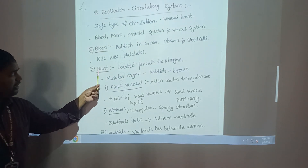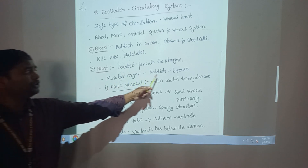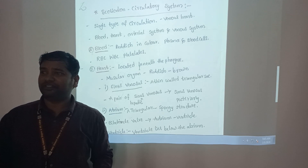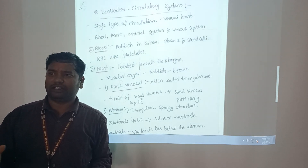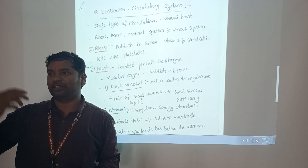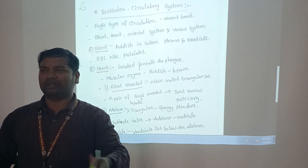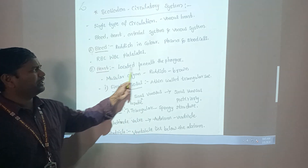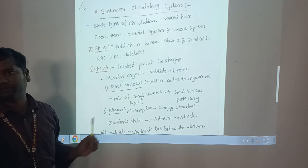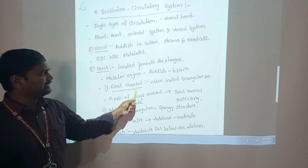The Scoliodon heart is located beneath the pericardium. The heart is a muscular organ, reddish brown in color. The heart structure is derived from mesoderm. In competitive exams, not only for Scoliodon but for any organism including humans, the heart muscles and bone system are derived from mesoderm, while the key structure is derived from endoderm. This is a very important point.